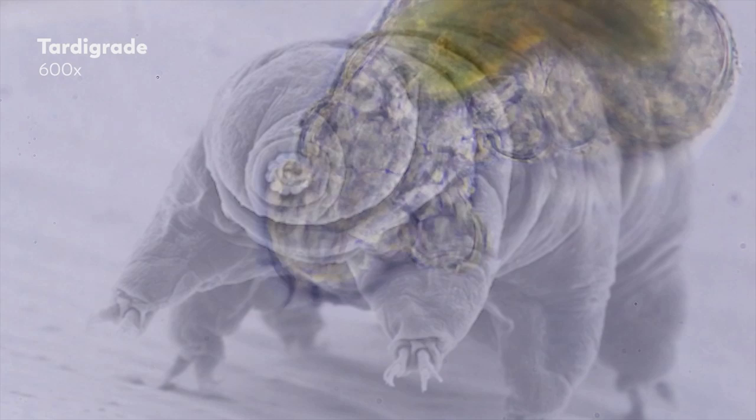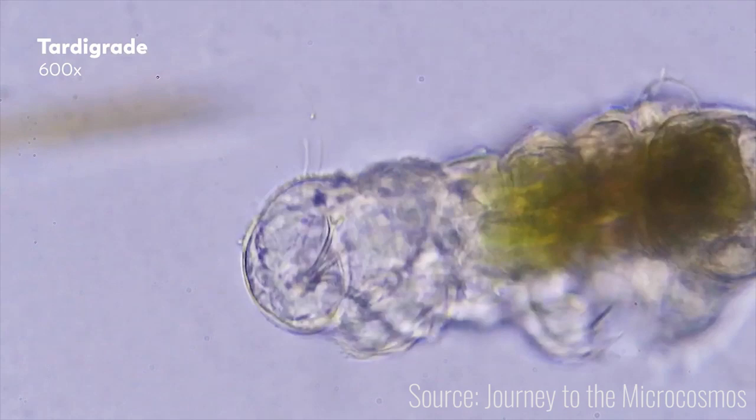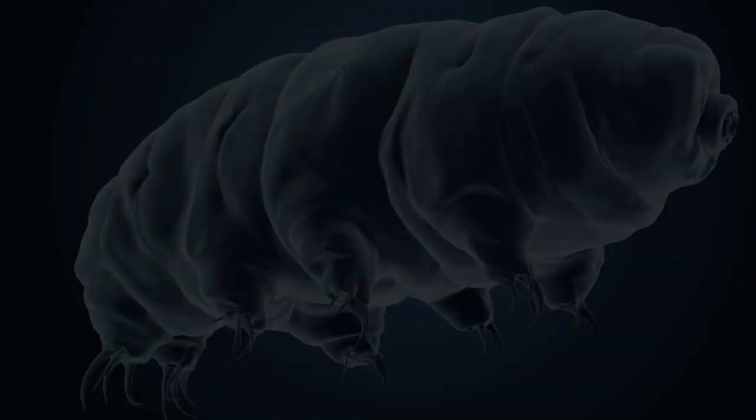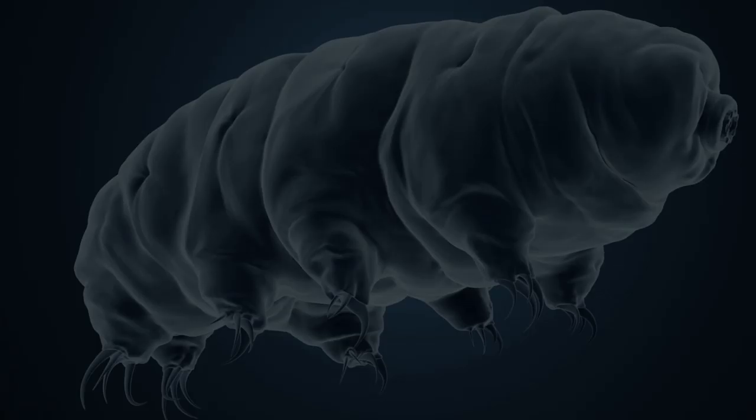The first three pairs of legs are used for locomotion, while the fourth is used to anchor. The small body of these water bears is covered with a layer called cuticle, which can be of different colors.